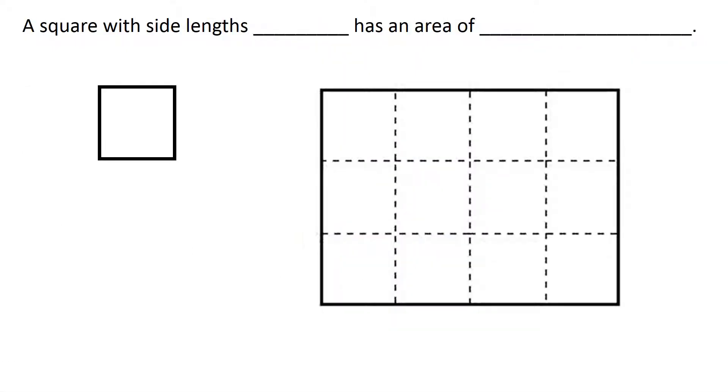So let's take a square that has side lengths of 1 centimeter. So here's a square that we have with 1 centimeter on each side. This square has an area of A equals 1 square centimeter.